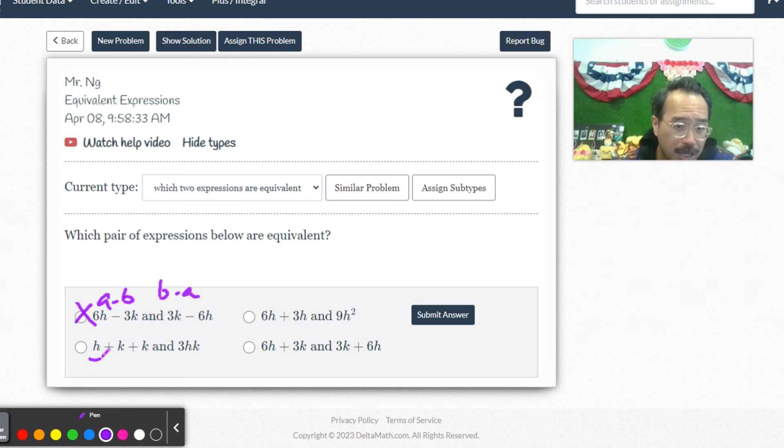h plus k plus k is h plus 2k, not 3hk, so that won't work. I don't think I gave you too many questions tonight because I know these usually take more time. Let's see, 6h plus 3h is not 9h squared - you can't multiply the two h's like that. So that only leaves us with this, which is the same because commutative property for addition is allowed.